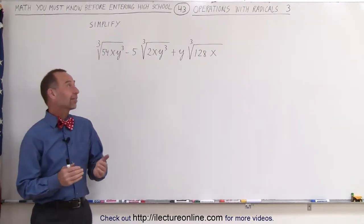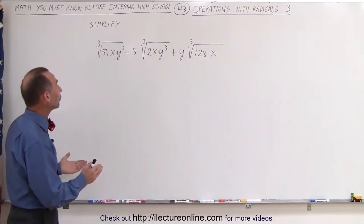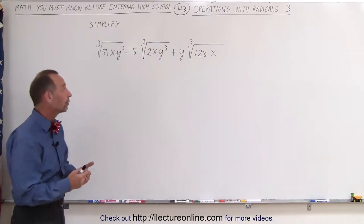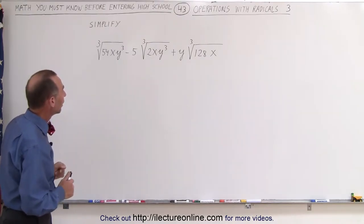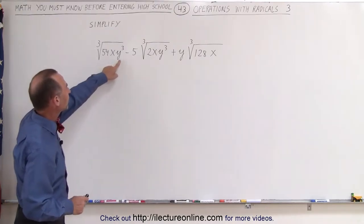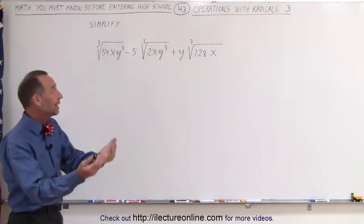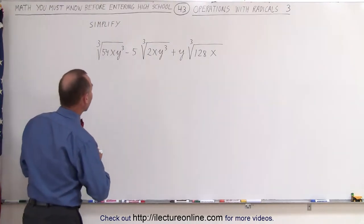Welcome to ElectronLine. Our next example, we have three radicals. All three of them are the cube root of something underneath the radical. Notice that we have a y cube here and a y cube there, so right away we can already get that outside the radical sign.